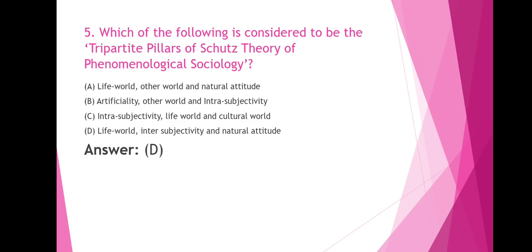Which of the following is considered to be the tripartite pillars of Schutz's theory of phenomenological sociology? Option A: Life World, Other World and Natural Attitude. Option B: Artificiality, Other World and Intrasubjectivity. Option C: Intrasubjectivity, Life World and Cultural World. Option D: Life World, Intersubjectivity and Natural Attitude. The correct answer is Option D — Life World, Intersubjectivity and Natural Attitude.